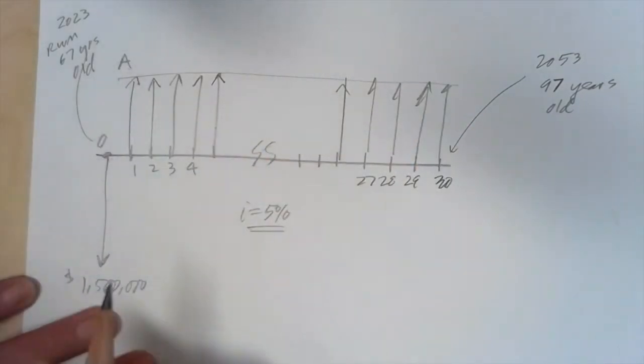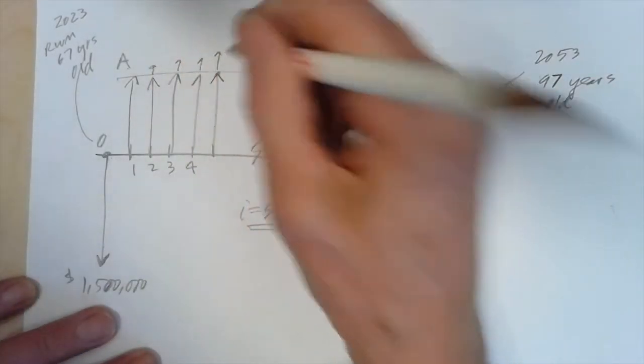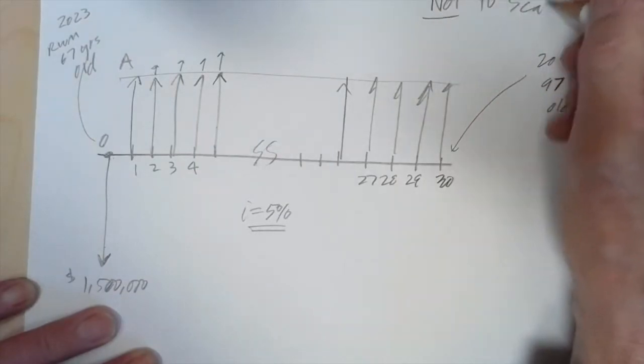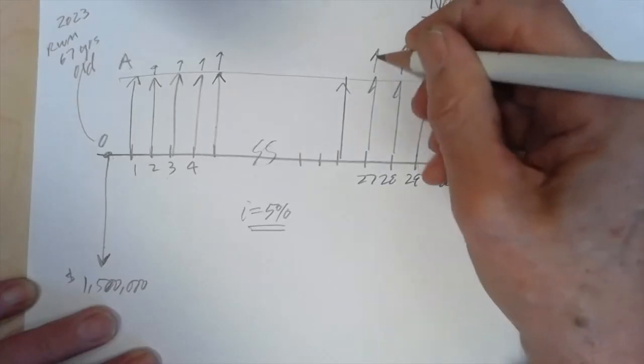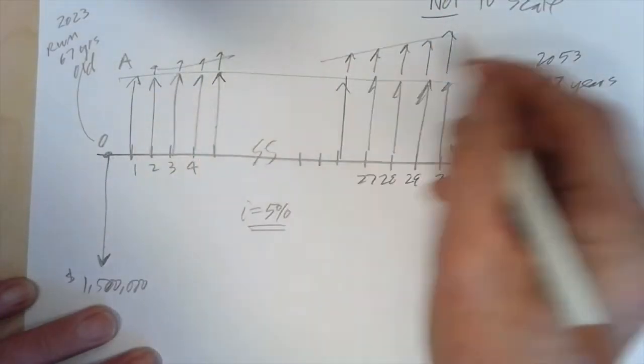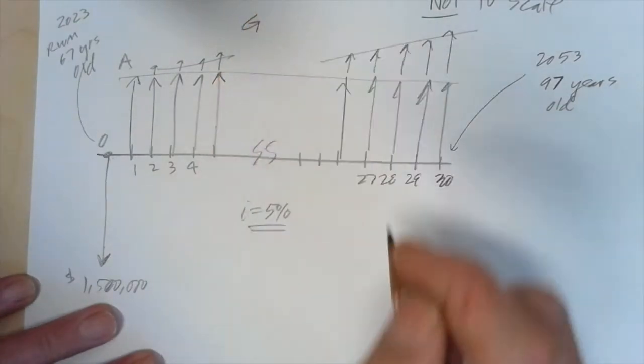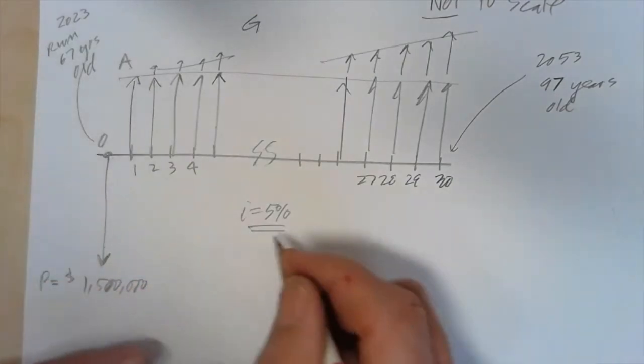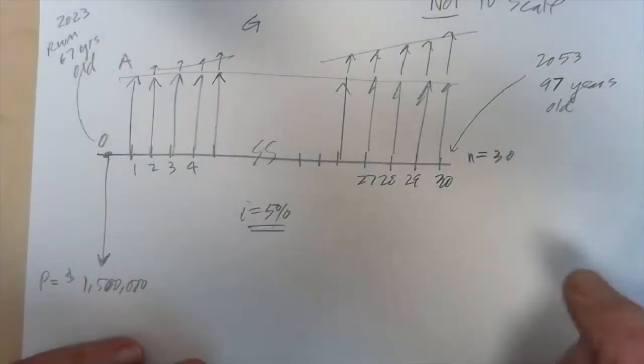So there's an A. And what I want to do is to give myself a little bit of a raise each year. And again, this is drawn not to scale. And this is going to be an arithmetic gradient. So there's going to be a G in here. We have a G, an A, we have a P, we have an I, and we have an N. We have all the factors we need to do a cash flow diagram.